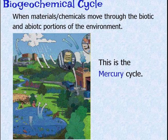Bio means life, geo means earth, and chemical means chemicals. So biogeochemical cycles describe when materials and chemicals move throughout the biotic and abiotic portions of the environment.